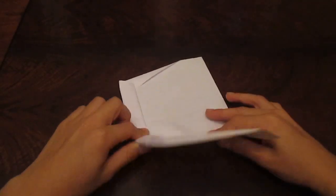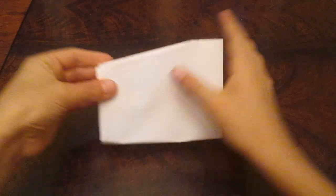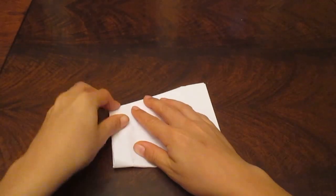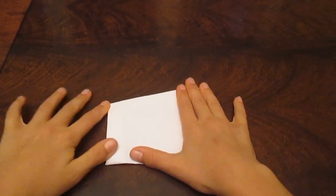Alright, so just take your finger in the middle, and fold it in half. And you want to make sure that they're lined up. Like that. And you want to just crease it all really nice, like that. Alright.